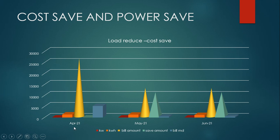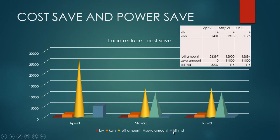This is April 2021, March 2021, and June 2021. Now this shows KWH, billing amount, save amount, and billing MD. For April month, the KW is 40 kilowatt, KWH used is 1,401, billing amount is very high at 26,397, save amount is none, and billing MD is 5,239. How do you calculate? 40 multiplied by 5 — that automatically gives 5,239.